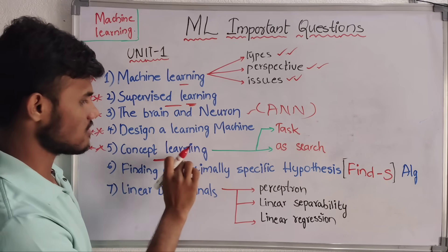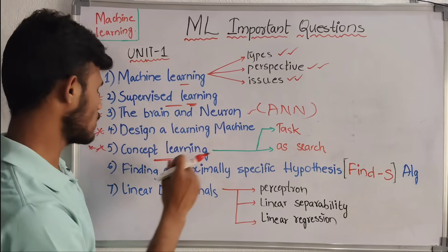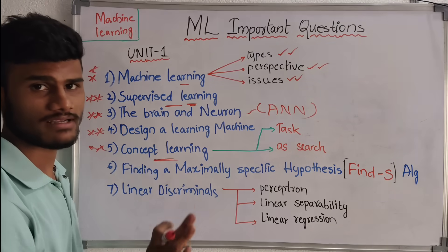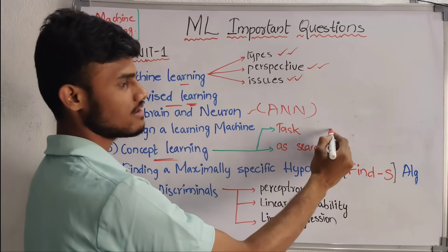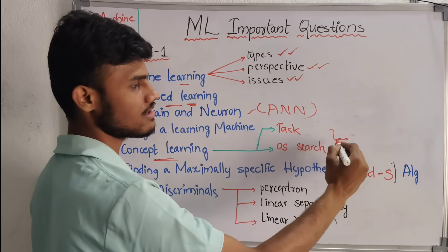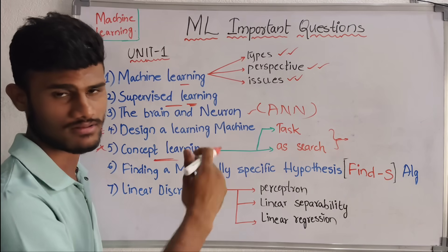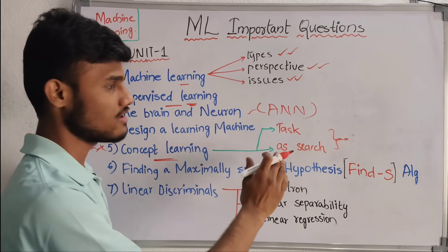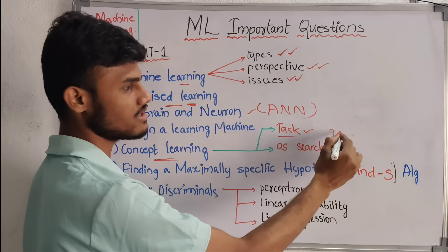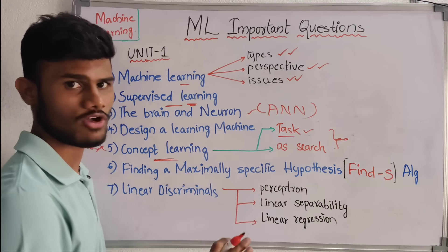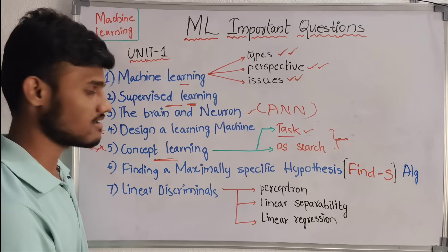This is Concept Learning. In Concept Learning, we have two topics combined into one question. If they ask about the task, you write both topics and you can elaborate the answer.